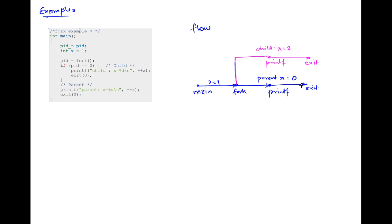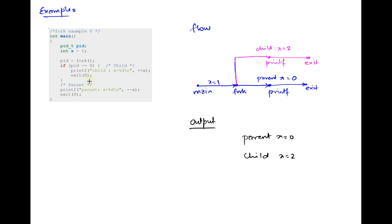The output to the console in this case would be: 'parent x equals 0' and 'child x equals 2'. Notice that the child did an exit immediately. There are interesting scenarios where if the child did not do an exit, it would continue executing the parent's conditional statement — we'll see scenarios like that.